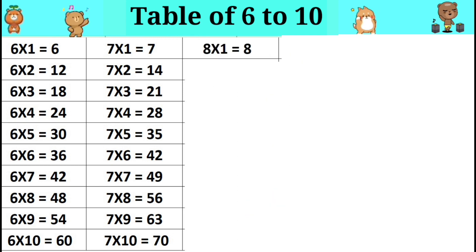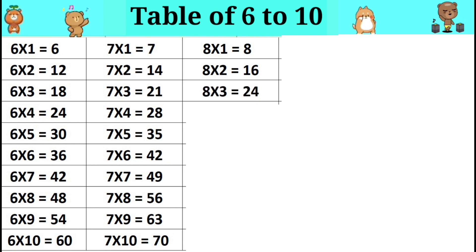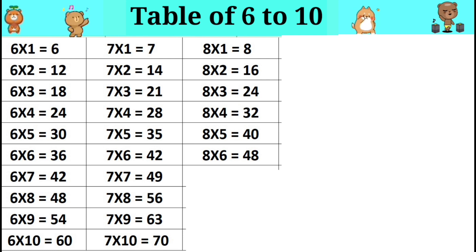Table of 8. Eight ones are 8. Eight twos are 16. Eight threes are 24. Eight fours are 32. Eight fives are 40. Eight sixes are 48.